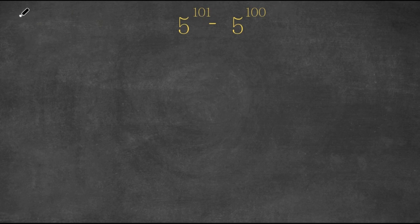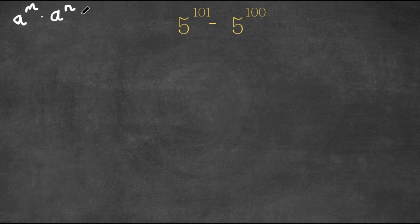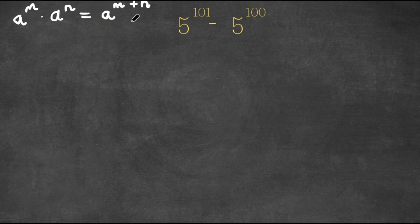Now, if we have something in the form a to the power of m times a to the power of n, then this is equal to a to the power of m plus n. And the same thing can be written vice versa: if we have something in the form a to the power of m plus n, this can be written as a to the power of m times a to the power of n.